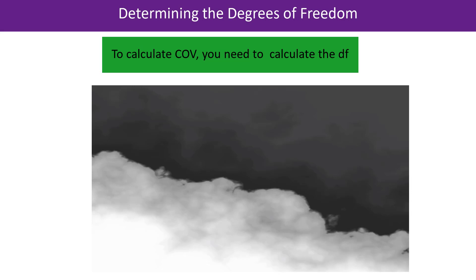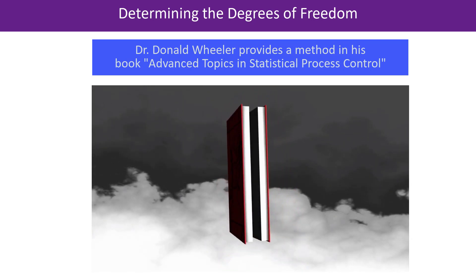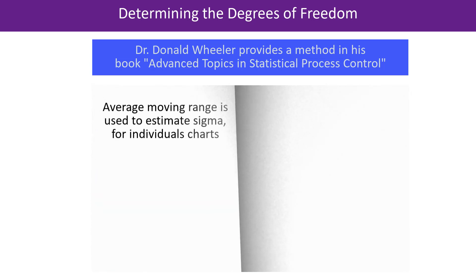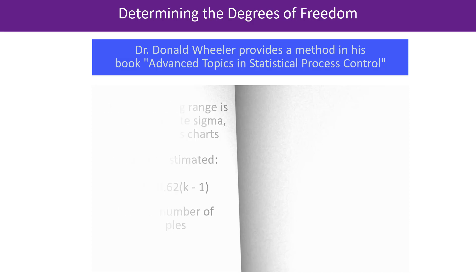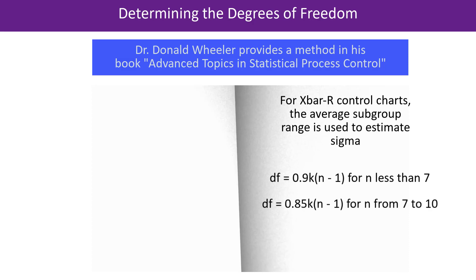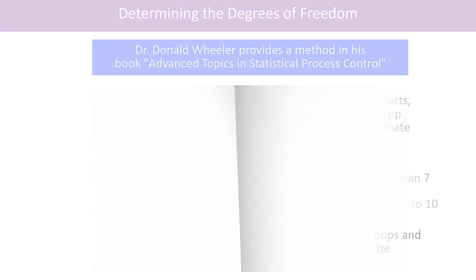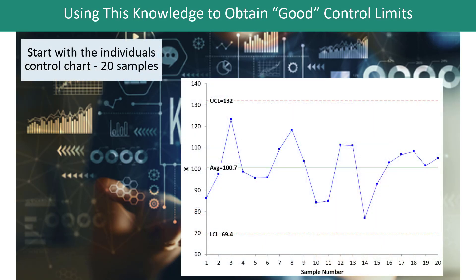Here's a plot of COV versus degrees of freedom, which looks a lot like the average moving range versus sample size chart. In the range of 10 to 30, COV begins to level off. 10 degrees of freedom corresponds to a COV of about 22%; 30 degrees of freedom corresponds to a COV of about 13%. This applies for any estimated sigma, and we calculate sigma differently depending on the type of control chart. Dr. Wheeler, in his book Advanced Topics in Statistical Process Control, provides the method. For individuals charts, the degrees of freedom formula is 0.62 times the number of samples minus 1. For X-bar and R charts, if your subgroup size is less than 7, degrees of freedom equals 0.9 times the number of subgroups divided by n minus 1, with a separate equation for subgroup sizes 7 to 10.